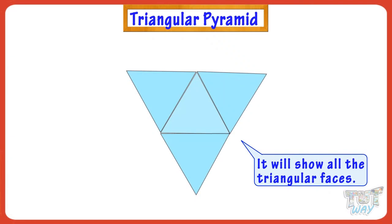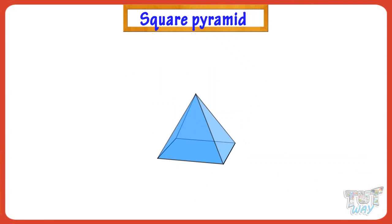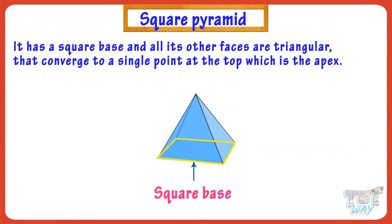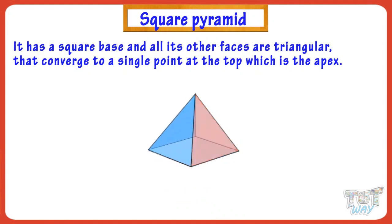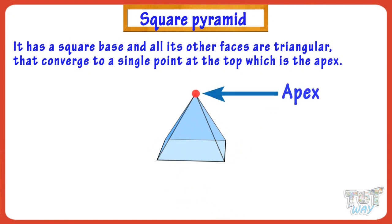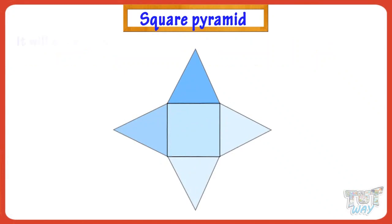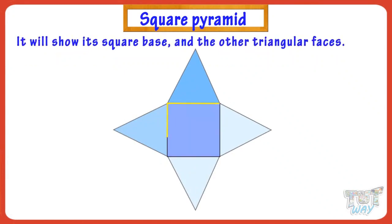Now let's take another example. Here we have a square pyramid. It has a square base, and all its other faces are triangular, that converge to a single point at the top, which is the apex. Now let's see how its net would look if we open it. It would look like this — showing its square base and the other triangular faces.